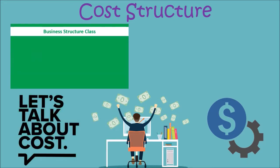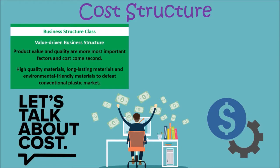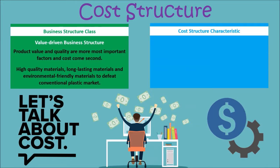First, we look at our business cost structure class, where we have chosen to focus on value-driven. This means our product value and quality are the most important factors, and cost comes second. In this structure class, high quality materials, long-lasting materials, and environmentally friendly materials are what we focus on to compete against the conventional plastic market. Next, in our cost structure characteristic, we will focus on economies of scale, which means our product cost will decrease as the amount of goods or orders produced increases.